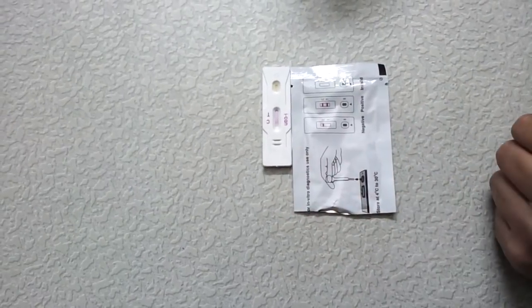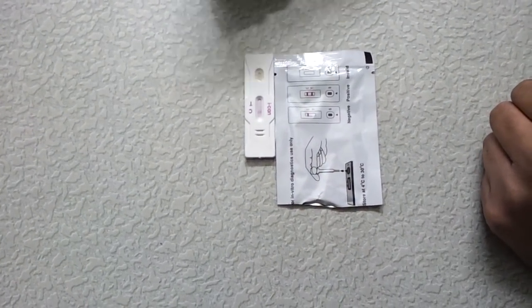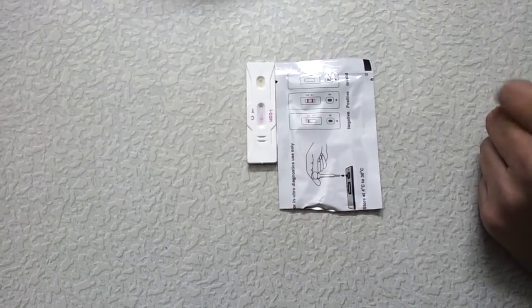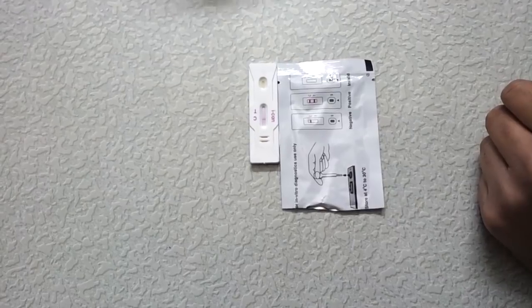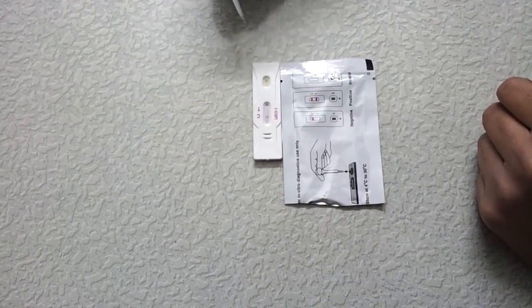Either the device is expired or you have not taken the samples well. So as you can see, there is only a single dark line, which means the results are negative. And hence, whosoever urine sample I have taken, she is not pregnant.